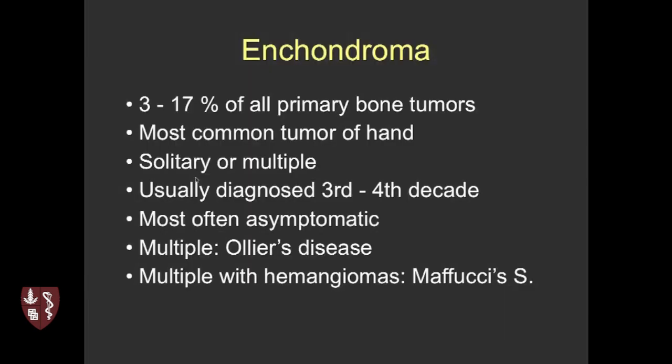Now moving to enchondromas — we see these all the time coming across the bone board as incidental findings. They account for up to 17% of primary bone tumors and are very common. If you have a focal lesion in the hand, enchondroma is the most likely suspect. They can be solitary or multiple, usually detected in the third and fourth decade. If multiple, that can be Ollier's disease; if multiple with hemangiomas, that's Maffucci's syndrome. Here's a classic appearance — humeral metadiaphysis, well-defined lobulated borders, no scalloping of the endosteum, no soft tissue mass, and dense calcification.